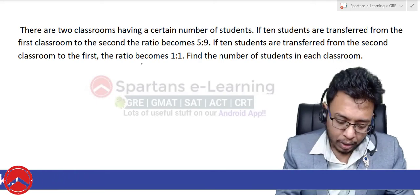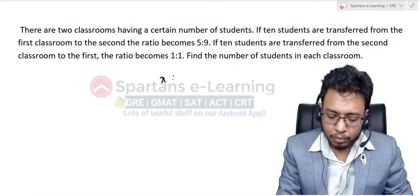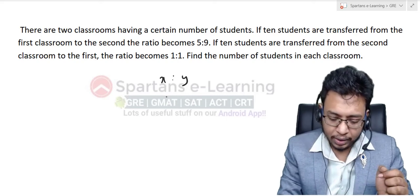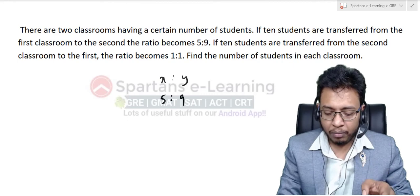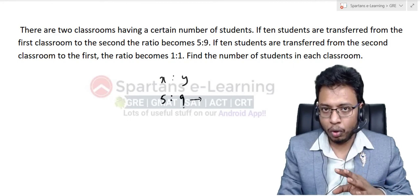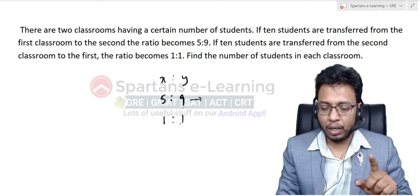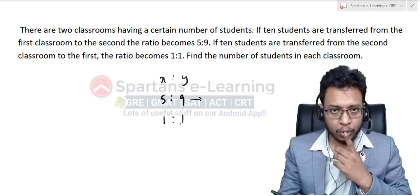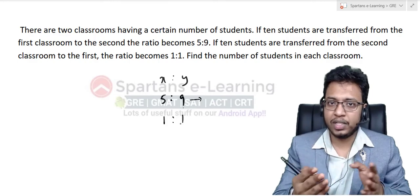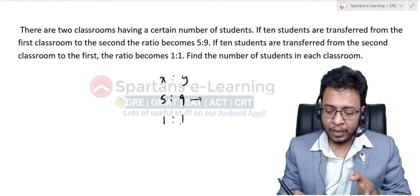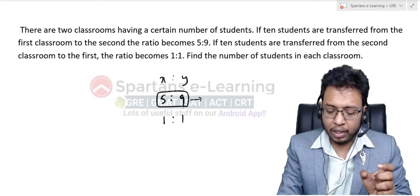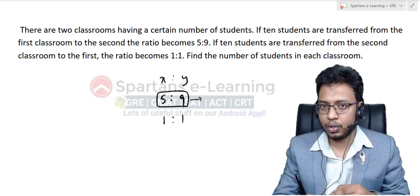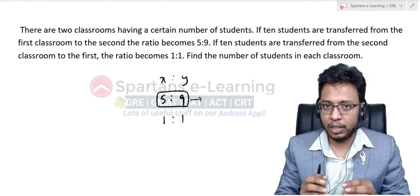Now let's solve this in a smarter way without variables. Initially there are x people in the first class and y in the second. After 10 people move from class x to class y, the ratio is 5 to 9. Then from that state, 10 people move from the 9-part class to the 5-part class, and the ratio becomes 1 to 1. The key observation: what is staying constant here?